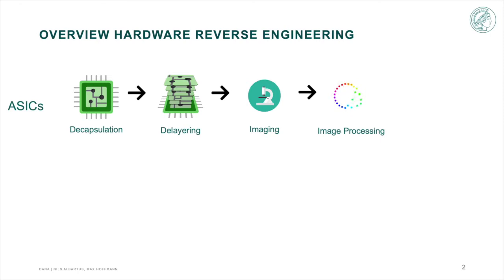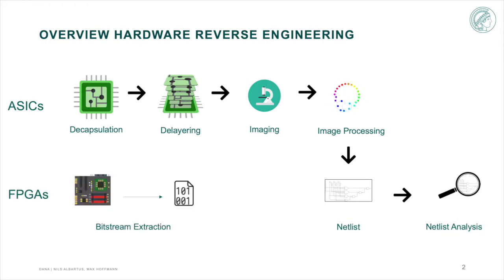This entire process is extremely time-consuming and requires a lot of specialized equipment and know-how. But once this is done, we end up with a netlist and can start the analysis. Starting with an FPGA, we have to extract the bitstream from the device, which is usually a non-volatile memory, and then convert the bitstream to a netlist.